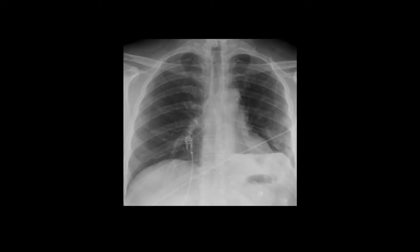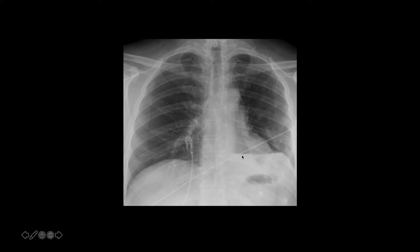Shifting gears to abnormal air collections in the thorax: here we have an air-fluid level. You should never see air-fluid levels anywhere in the chest under normal circumstances. This should always clue you into the presence of something, which is usually a hydropneumothorax as in this case — you can see the medial pleural margin of the lung. On a lateral view, the air-fluid level line would be much shorter in one view and much longer in the other, because of the elliptical shape of the pleural space, whereas air-fluid levels in a lung abscess tend to have about the same width on frontal and lateral views since abscesses tend to be spherical.